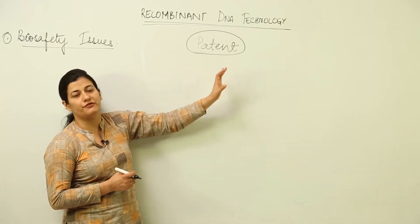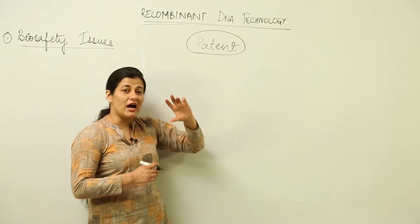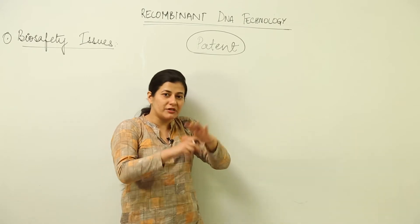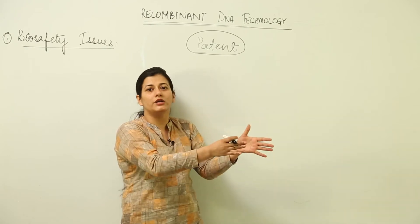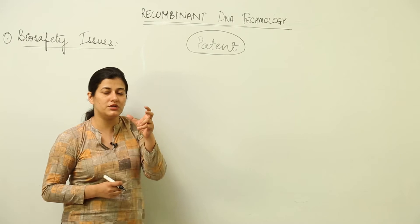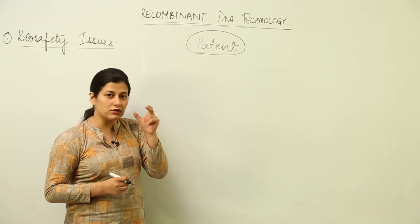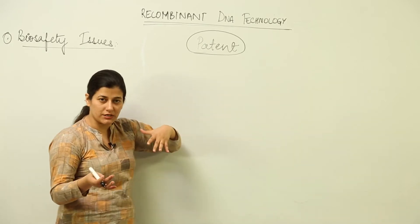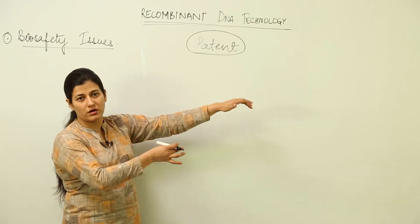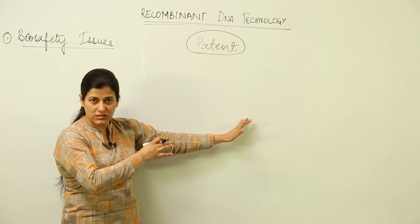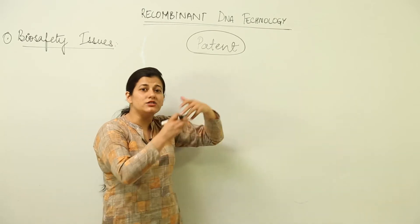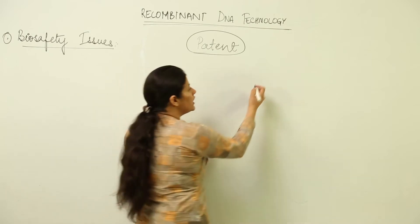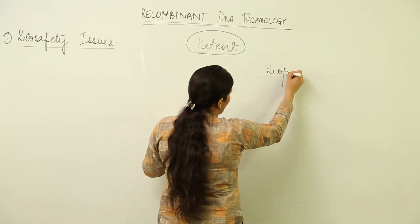The government grants a patent to a particular field of discovery. Whatever inventions are being made, the patent enables you to keep a check — that invention is made in your name only. If an inventor has found a certain genetic strain, the monopoly goes to that inventor. Whatever usage of that particular product is to be made, the rights of possession lie with the patent holder.